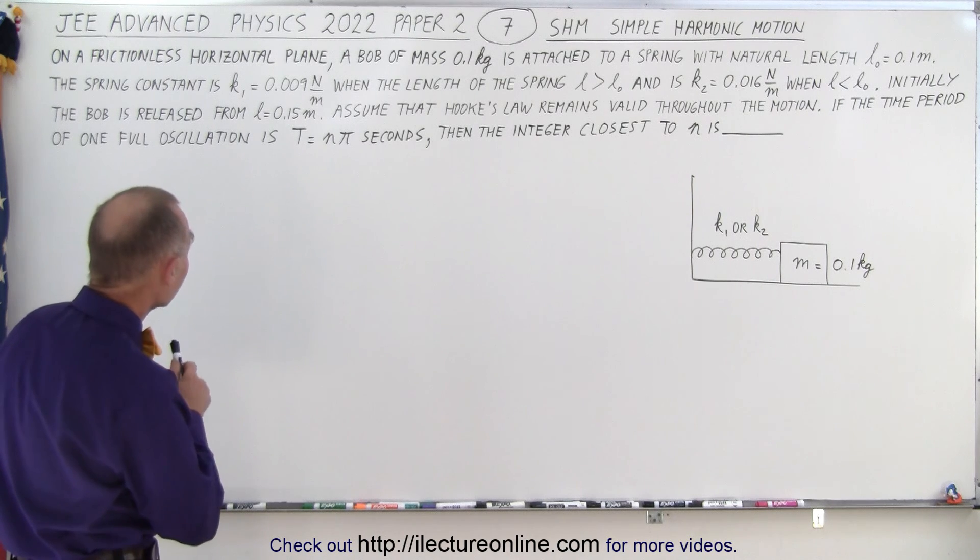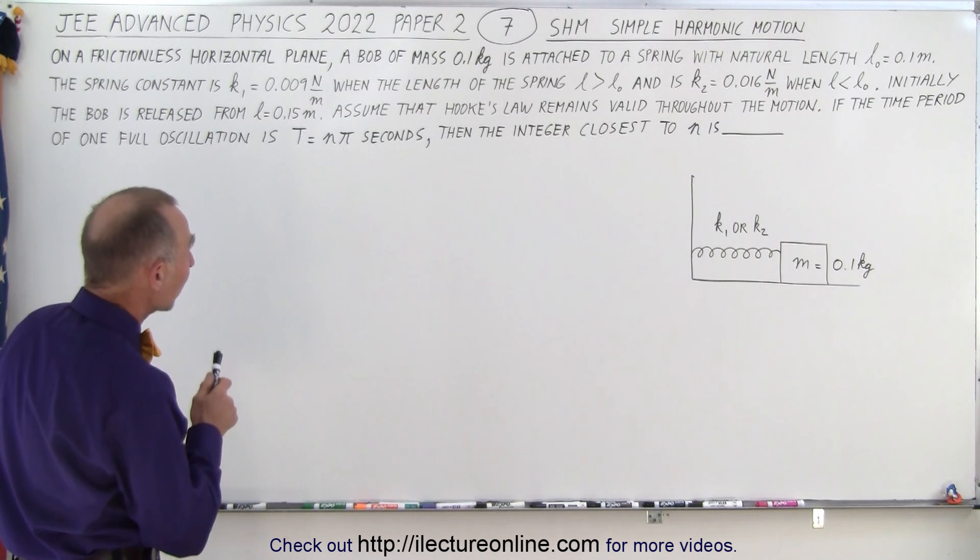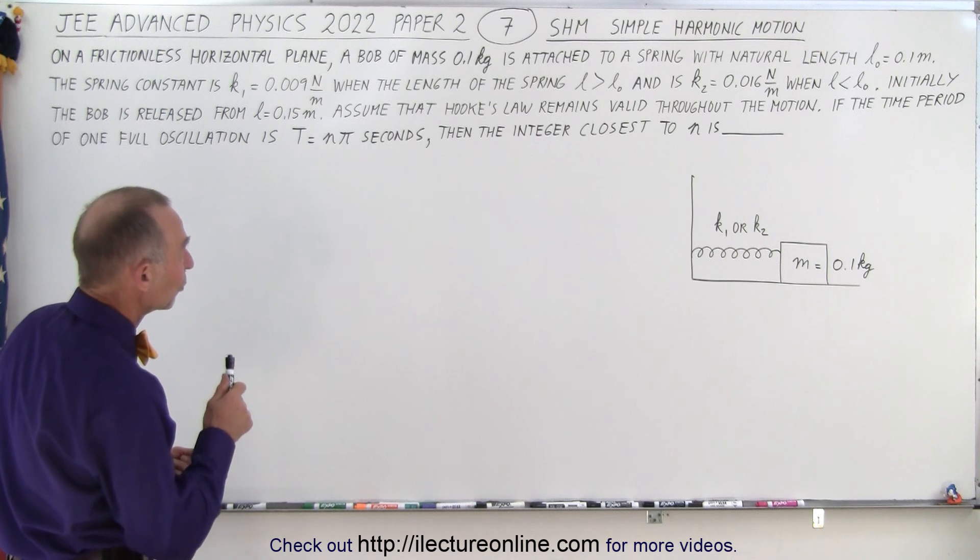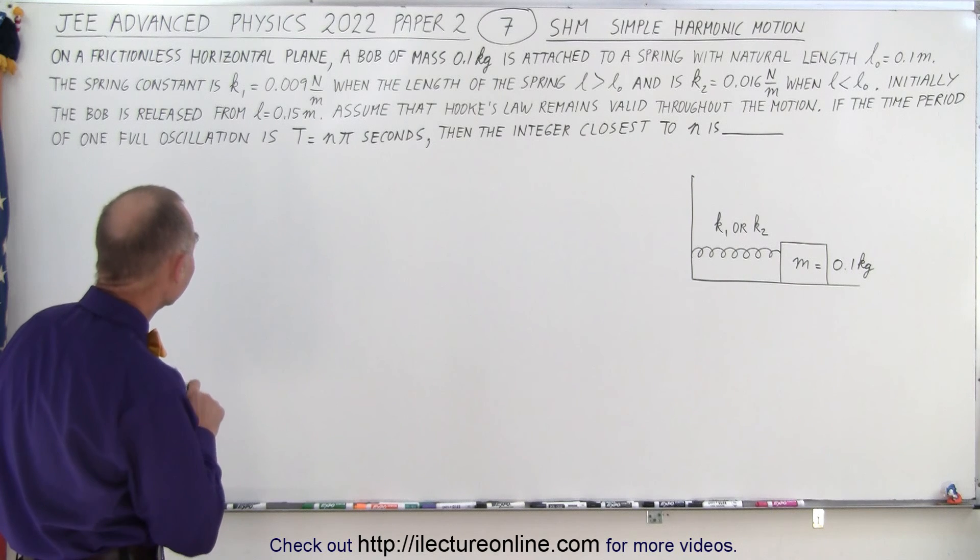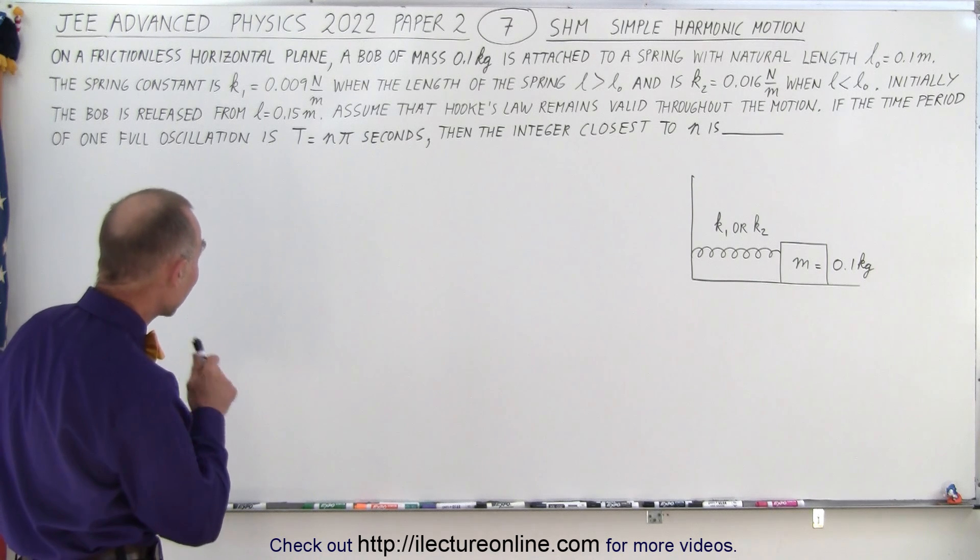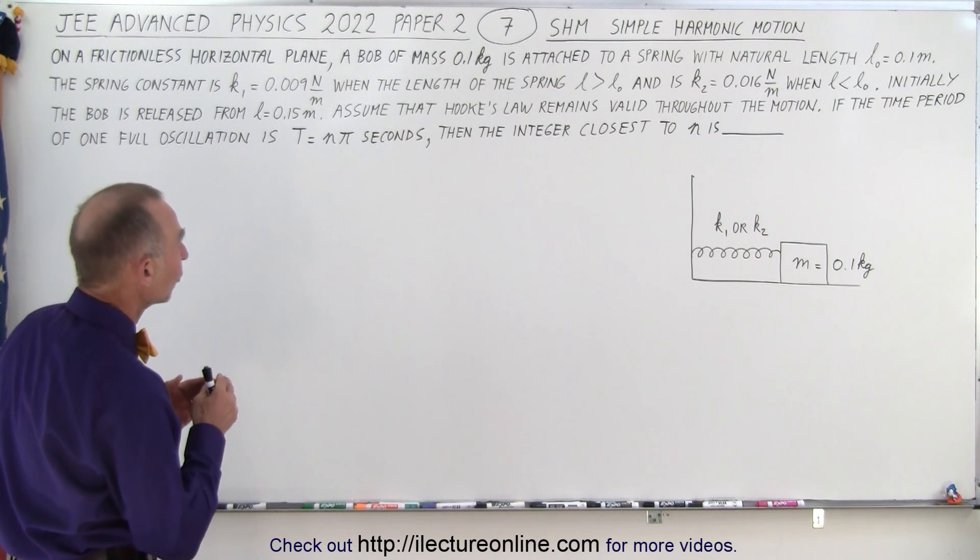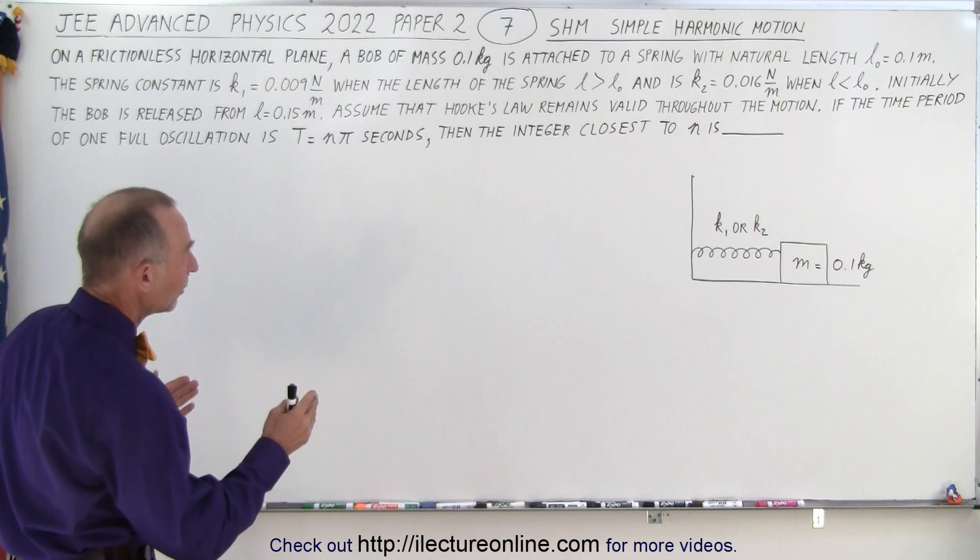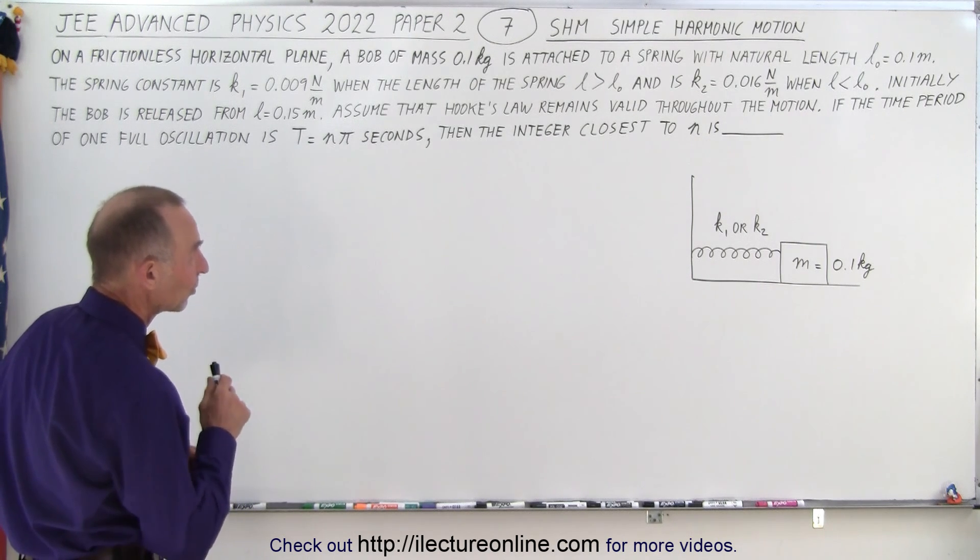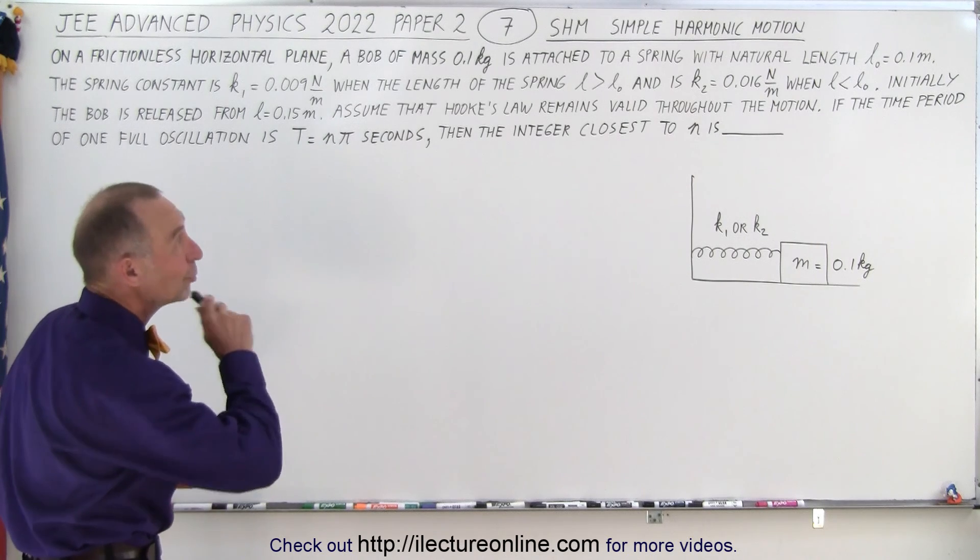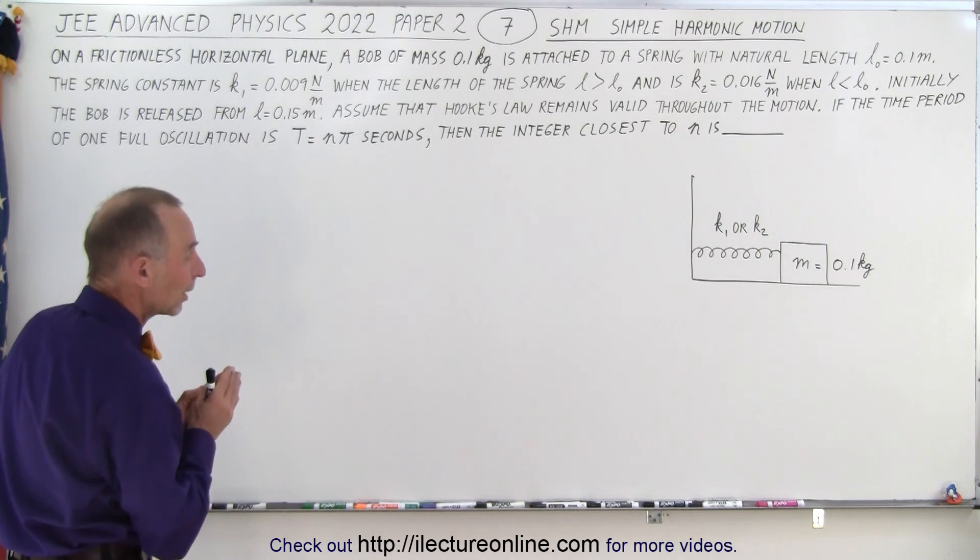On a frictionless horizontal plane a bob of mass 0.1 kilogram is attached to a spring with natural length l equals 0.1 meters. The spring constant is k1 = 0.009 newtons per meter when the length of the spring is greater than l sub knot and k2 is 0.016 newton per meter when l is smaller than l sub knot.